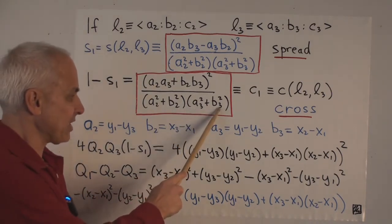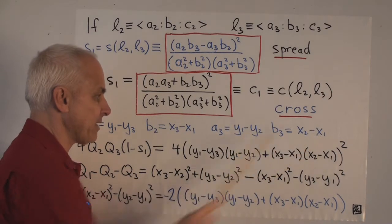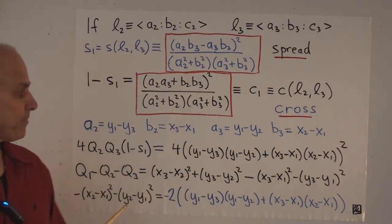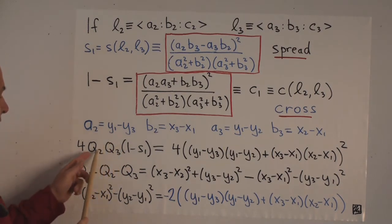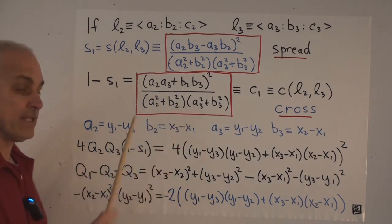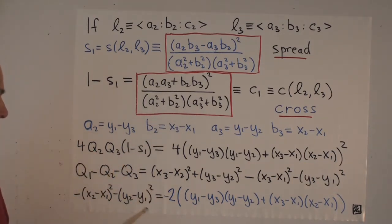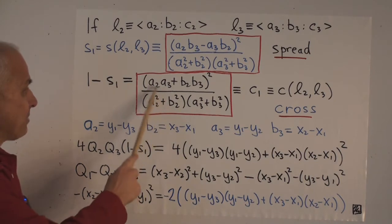And this thing squared plus this thing squared, that plus that, that's exactly the quadrance that we're calling Q3. So if we multiply Q2 times Q3 times 1 minus S1, then the two things here in the denominator cancel with these two quadrances.